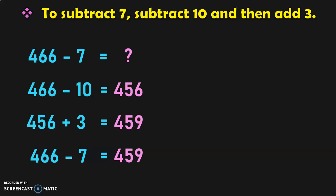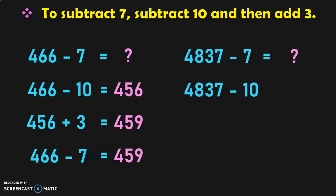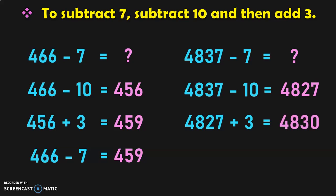Let us do another example. 4,837 minus 7 is equal to what? First, subtract 4,837 minus 10, which is 4,827. Now, 4,827 plus 3 will give you 4,830. So, the answer for 4,837 minus 7 is equal to 4,830.